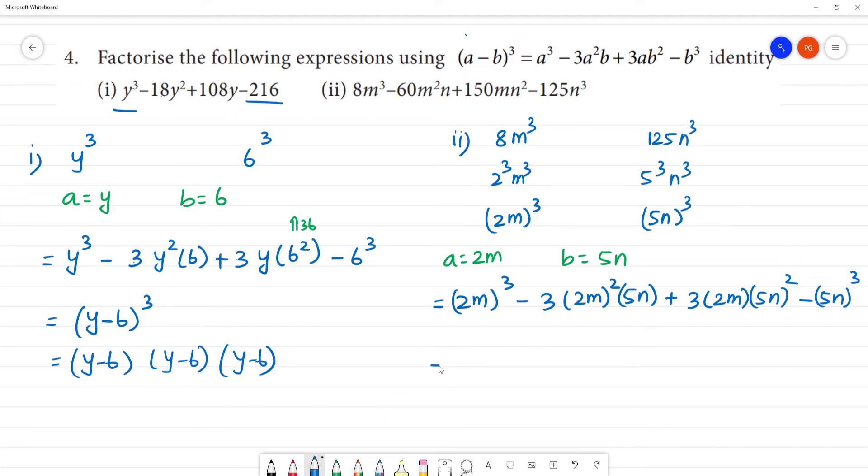So now we can answer: 2m minus 5n the whole cube. 2m minus 5n the whole cube. So here we can see the factors: 2m minus 5n.